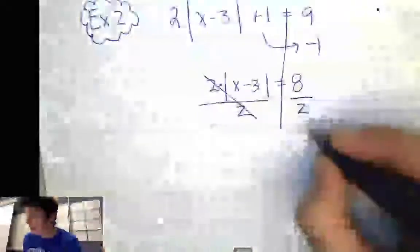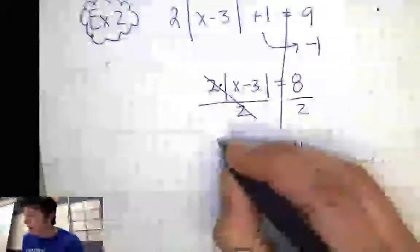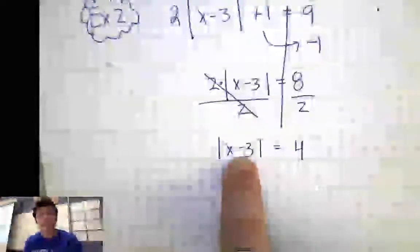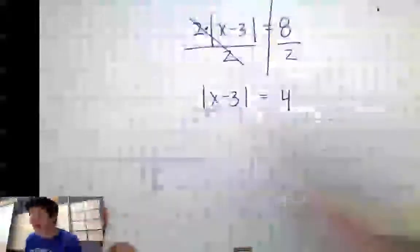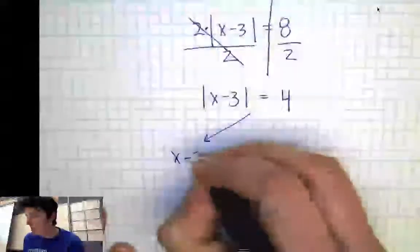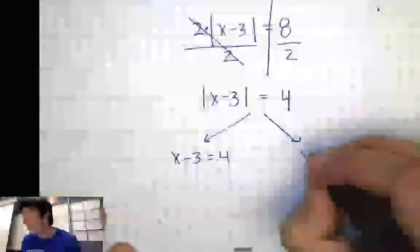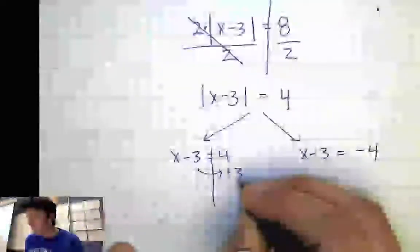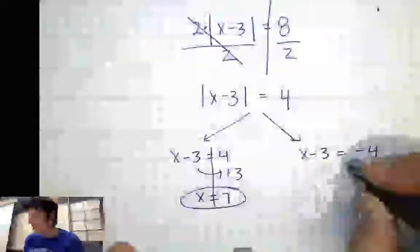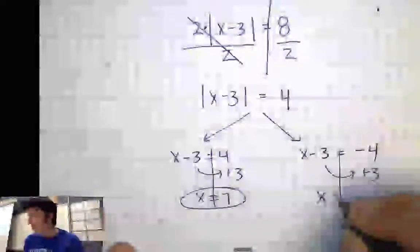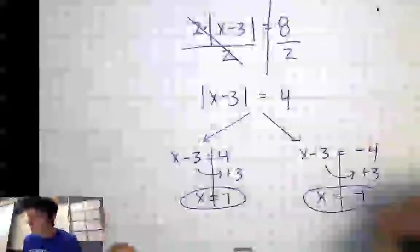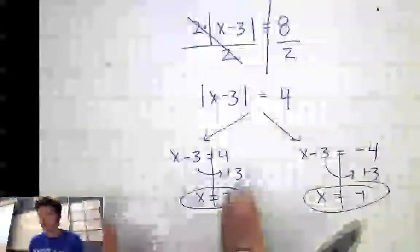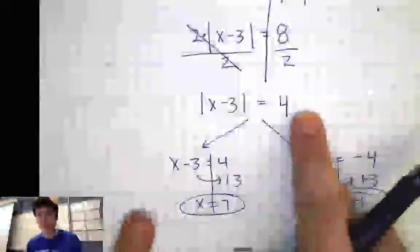2 absolute value means 2 times the absolute value quantity of x minus 3. To get rid of the multiplication, divide both sides by 2: absolute value of x minus 3 equals 4. That means either I'll have a positive 4 or a negative 4 inside the absolute value. Now I'm ready to split: x minus 3 equals 4, giving x equals 7; or x minus 3 equals negative 4, giving x equals negative 1. Those are my two answers. If there are things on the outside of the absolute value, move them over first before you split.